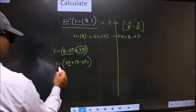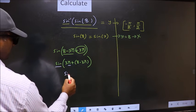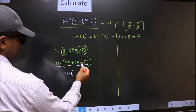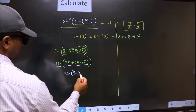Here we have pi. So sin is not going to change. It will remain sin. And inside we get this angle 8 minus 3 pi.